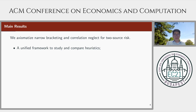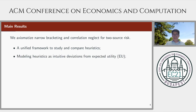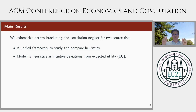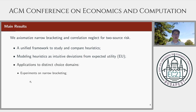Second, we show that these heuristics can be captured by intuitive and simple deviations from the expected utility benchmark. We have a non-expected utility model by relaxing the von Neumann-Morgenstern independence axiom. In this sense, narrow bracketing and correlation neglect are no more behavioral or irrational than other commonly used non-expected utility models, like the certainty effect under prospect theory. This suggests that narrow bracketing and correlation neglect might deserve more attention in both theoretical and applied works.